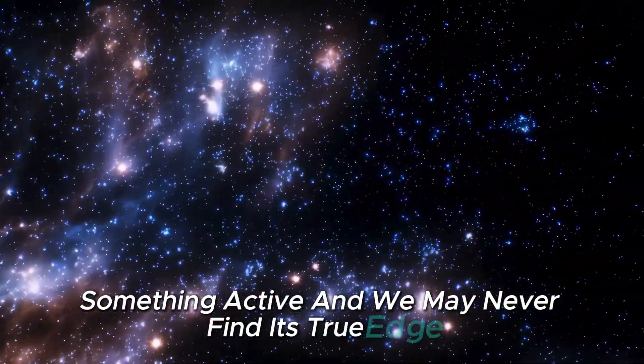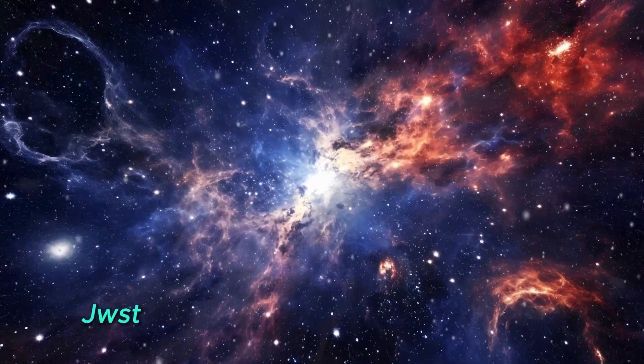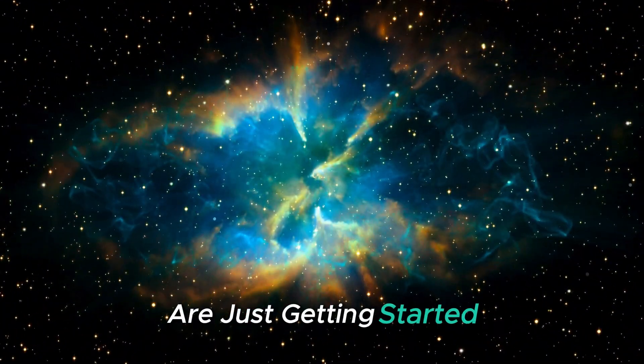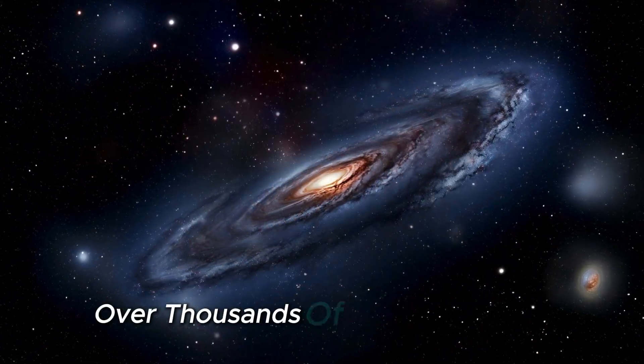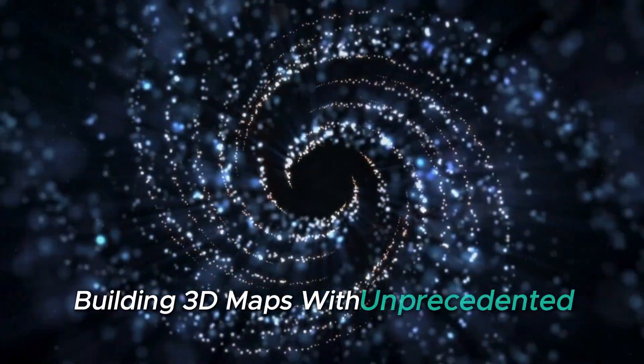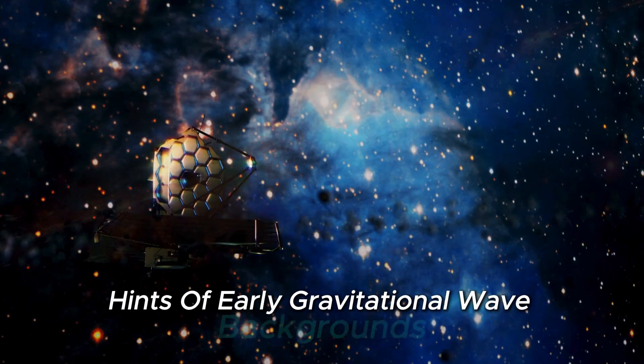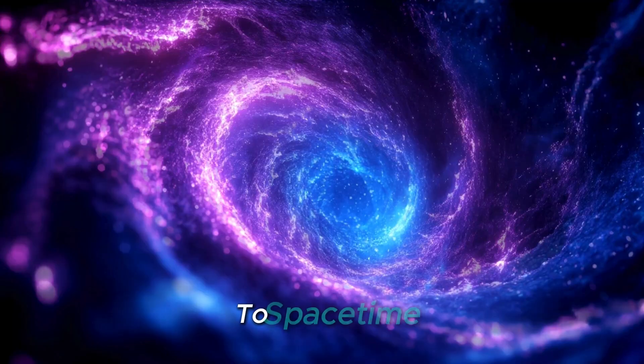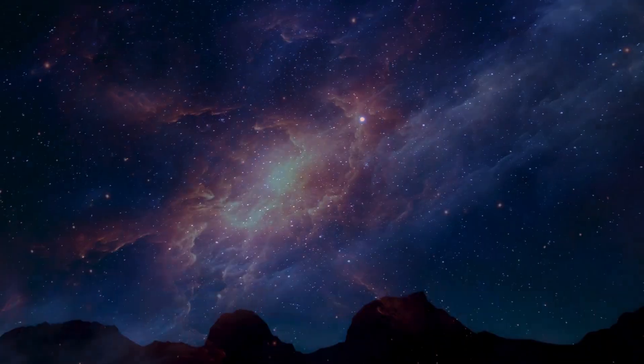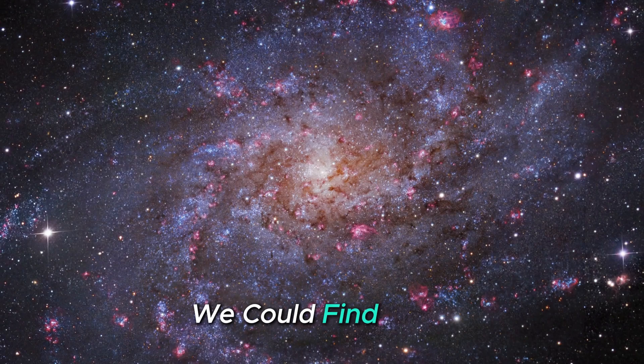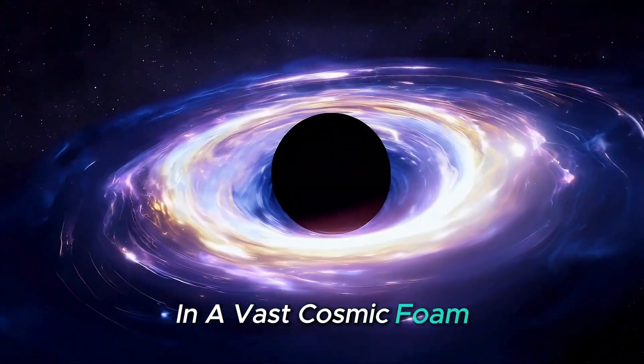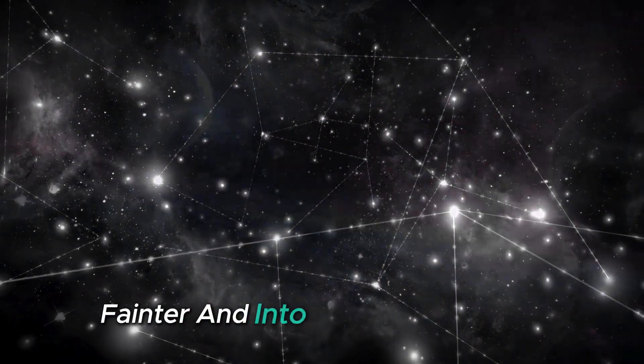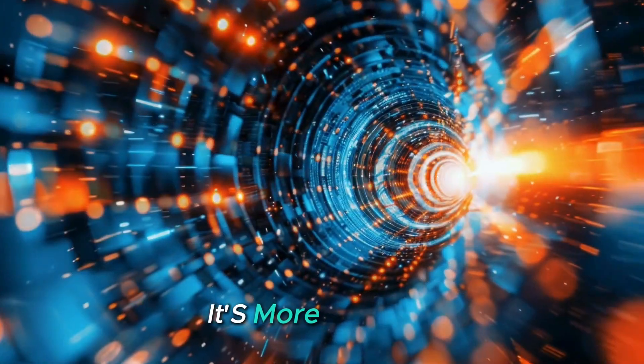The story doesn't end here. JWST and the upcoming Nancy Grace Roman Space Telescope, set to launch in 2027, are just getting started. Roman will map billions of galaxies over thousands of square degrees, building 3D maps with unprecedented precision. What might we find? Hints of early gravitational wave backgrounds could reveal conditions from the universe's first moments. We might uncover evidence of quantum limits to space-time, where the universe's information capacity hits fundamental boundaries. Most profoundly, we could find signs that our universe is just one bubble in a vast cosmic foam, a single branch in a quantum multiverse. Each time we push our telescopes farther, fainter, and into new wavelengths, the universe surprises us. It's more dynamic, more complex, and more unexpected than we ever imagined.